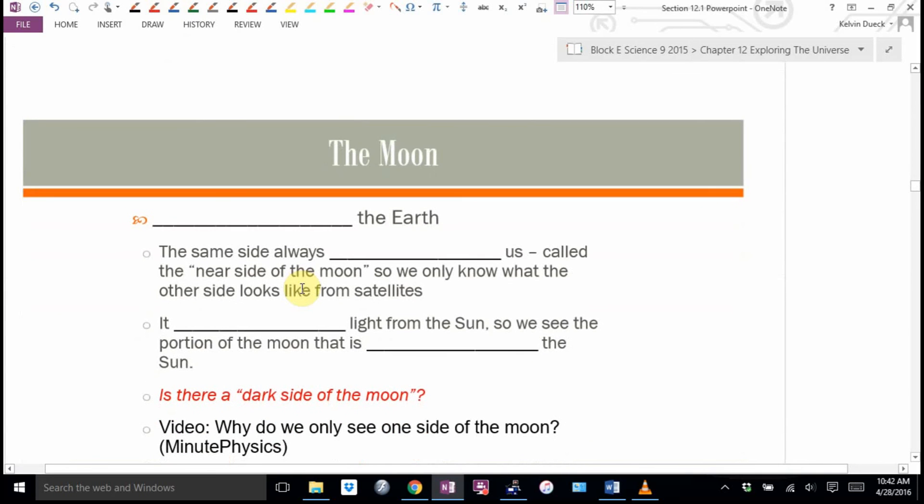The moon, the brightest object in the night sky. So, the moon orbits the Earth. The same side always faces us. It's the near side of the moon. We only know what the other side of the moon looks like from satellites. Does the moon give off light of its own? What does it do then? Why is it so bright? It reflects light from the sun.